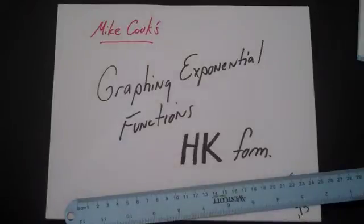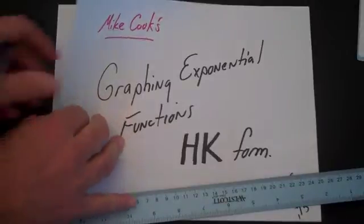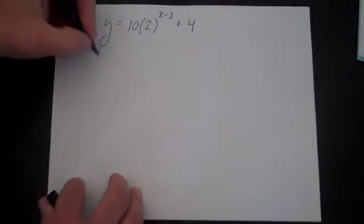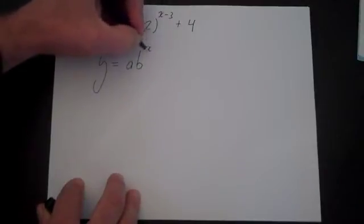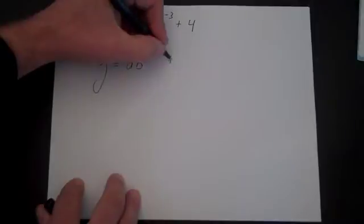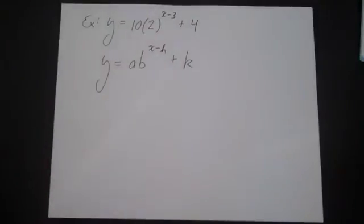Okay, now let's focus on graphing exponential functions in HK form. So first let's look at what we mean by HK form by looking at an example. Let's say we have y equals 10 times 2 to the x minus 3 plus 4. The general form is y equals a times b to the x minus h plus k. And this is just our basic HK form.